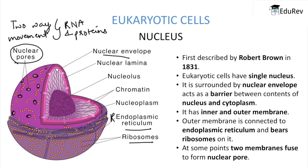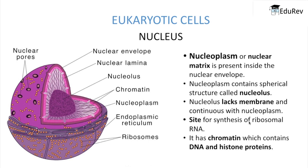Inside the nucleus, nucleoplasm or nuclear matrix is present. The nucleoplasm contains a spherical structure called the nucleolus. The nucleolus lacks a membrane and lies continuous with the nucleoplasm. It is the site for synthesis of rRNA, that is ribosomal RNA.